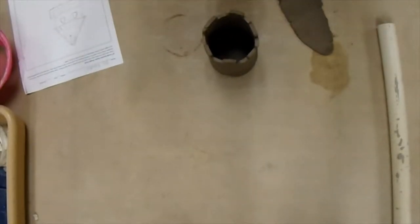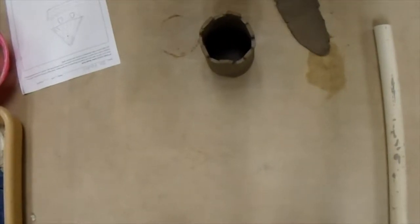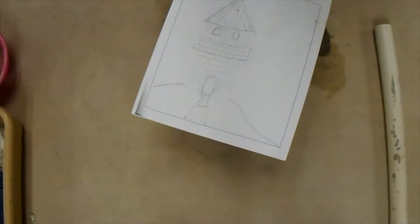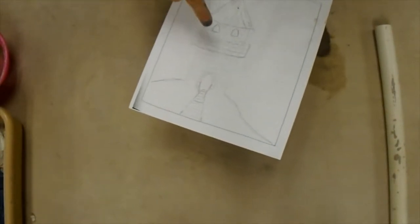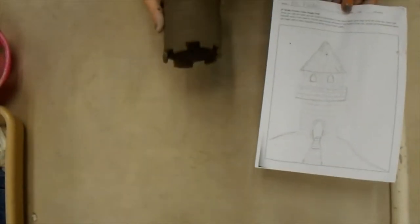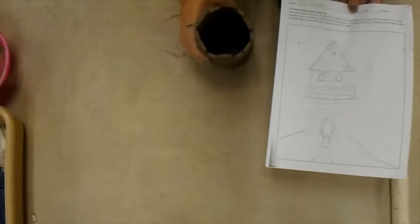The next step to creating the rest of the details on your castle is to decide what features from your rough draft drawing you want to include. Remember that doors and windows were required to be demonstrated somewhere on the castle.